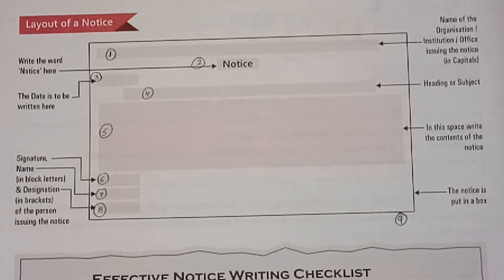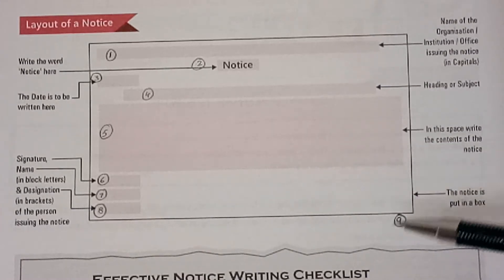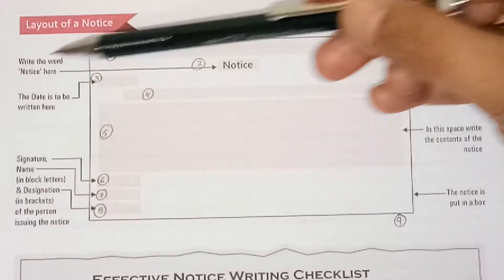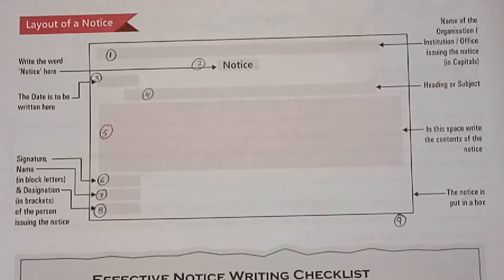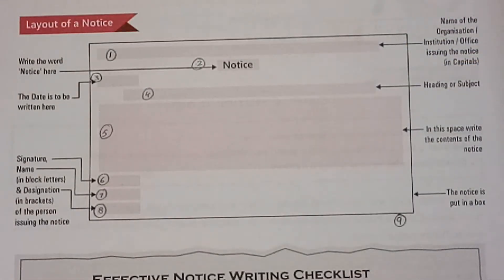To write a notice, the very first thing you have to do — I have given number 9 to box making. But children, before writing a notice, you should make a box on three sides — one, two, and three sides — not the bottom one. You should not mark the bottom line because your notice can exceed that point also. So please make these three boundaries before writing the notice.